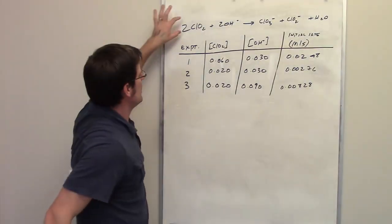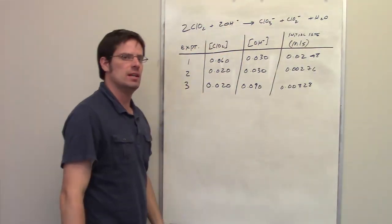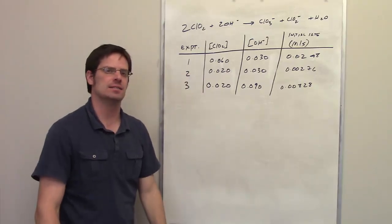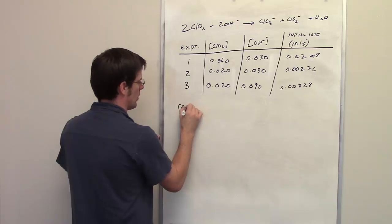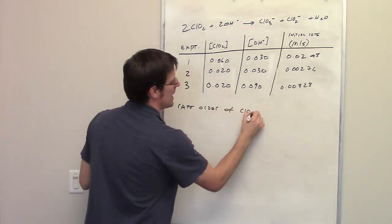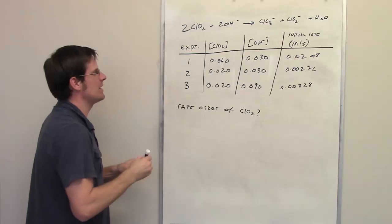In this question, we're given this big complicated looking reaction and this table of data. And then we're asked to determine the rate order of chlorine dioxide, that is component A.